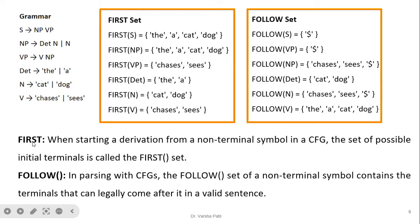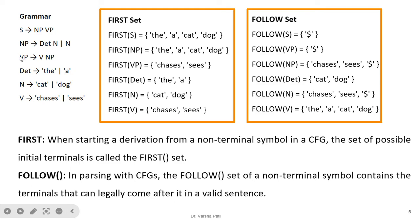We now look at the right-hand side. S is not present on the right-hand side, so we put dollar in Follow(S). For Follow(VP), VP appears here but after VP there is nothing, so we take Follow(S) which is dollar. For Follow(NP), there are two cases: in one case there is no terminal or non-terminal after NP, so we take Follow(VP) which is dollar. In the other case, after NP there is VP, so we take First(VP) which is 'chases' and 'sees'.